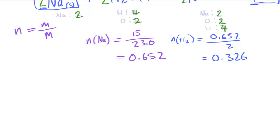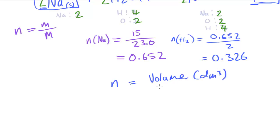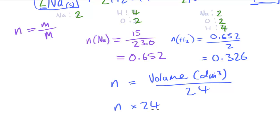Now that I've got the number of moles, the next stage is to work out the volume. This is slightly different from working out masses, because we can use the molar volume directly — we don't need to know the molar mass of the molecule. Since decimeters cubed is the standard unit for measuring volume, I'll work in dm³. The equation is: moles = volume (dm³) ÷ 24, where 24 dm³/mol is the molar volume. Rearranging: volume = moles × 24.